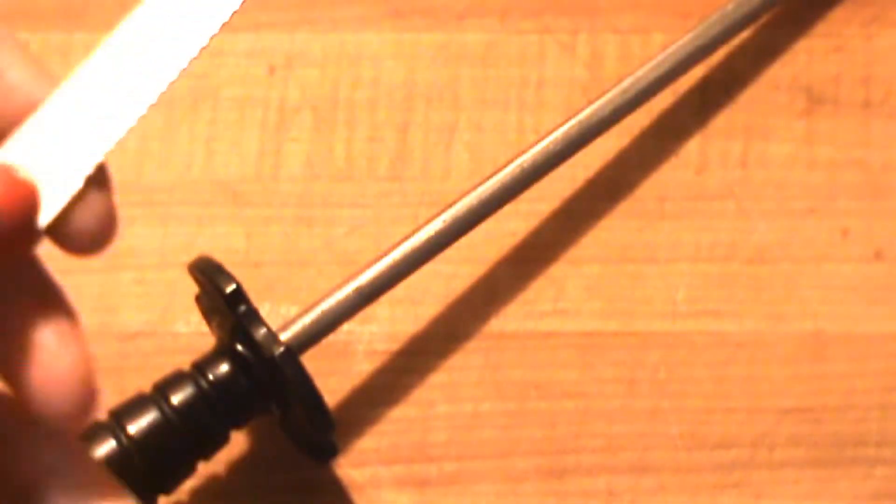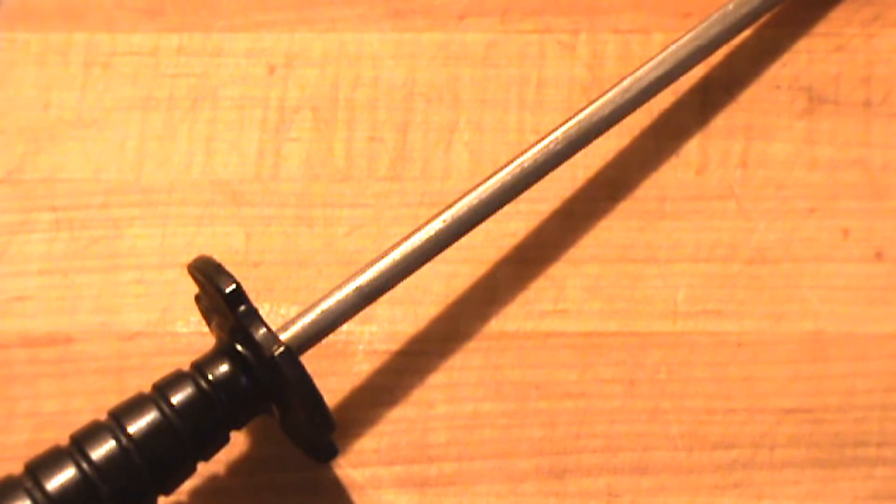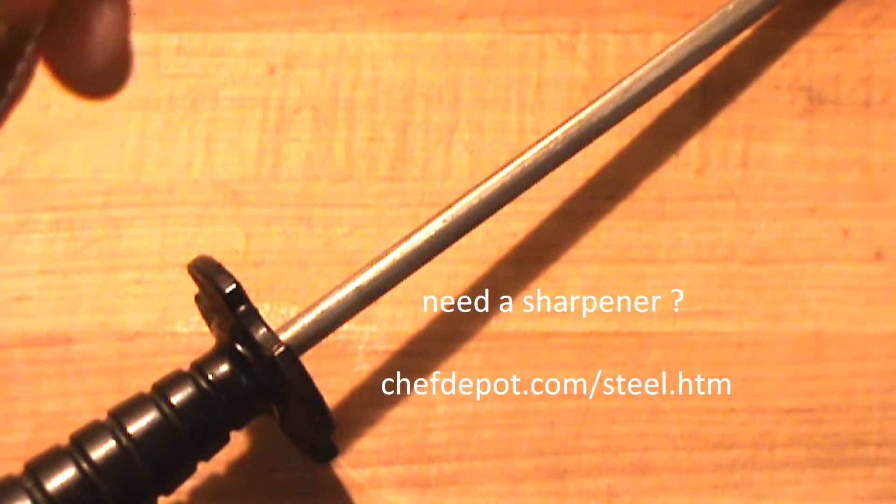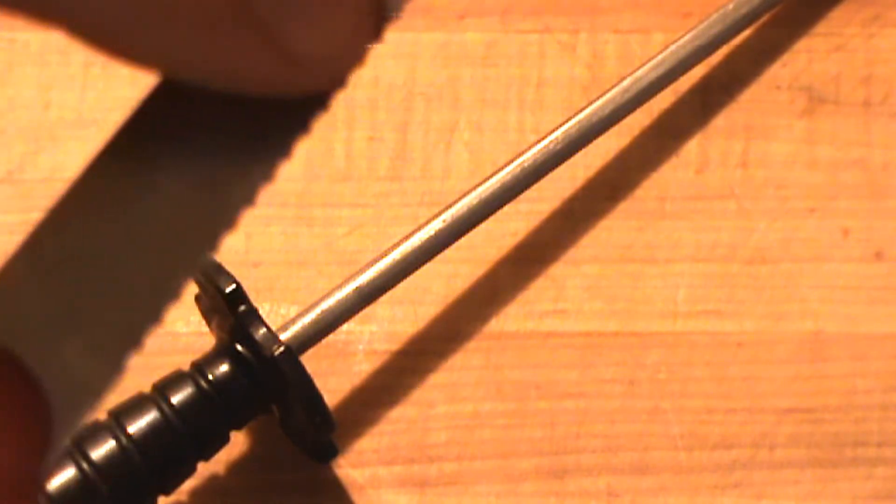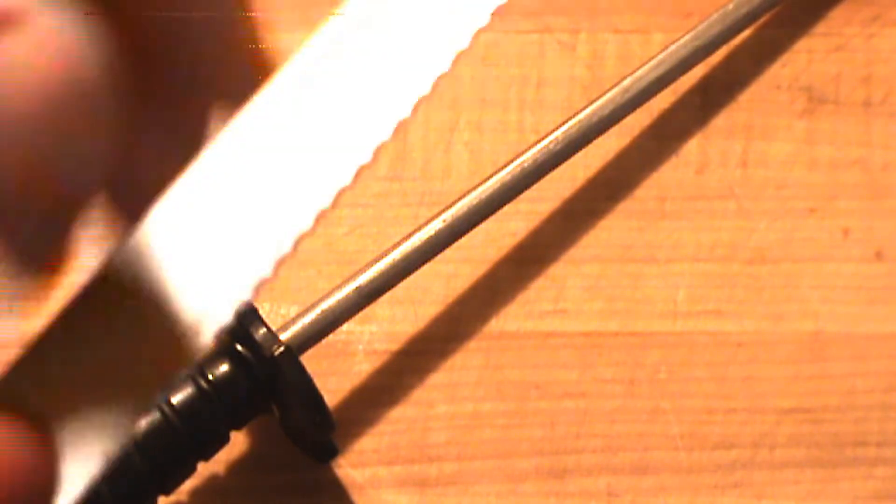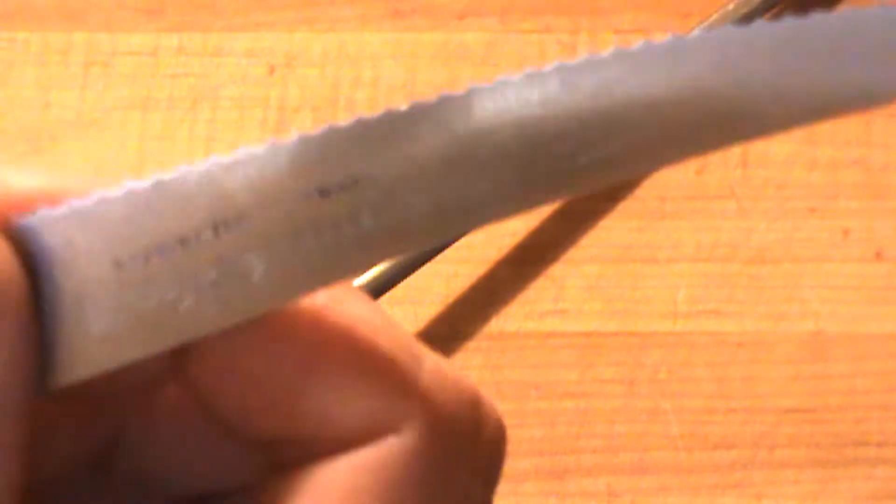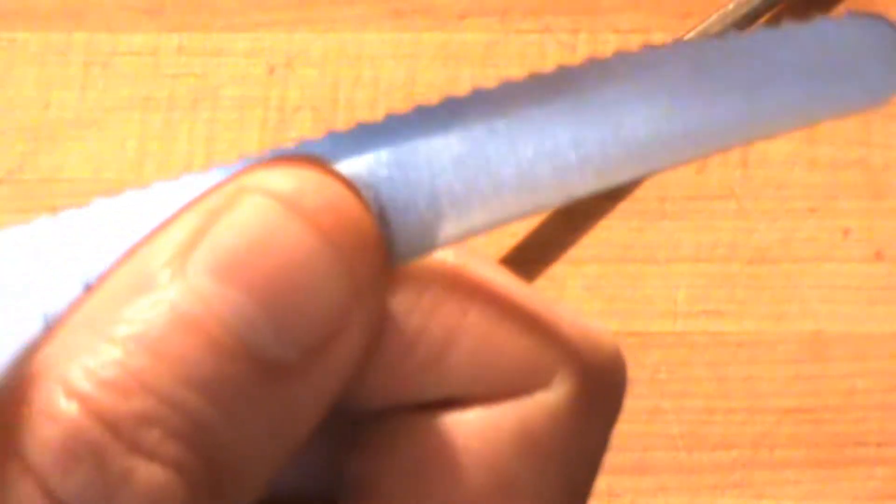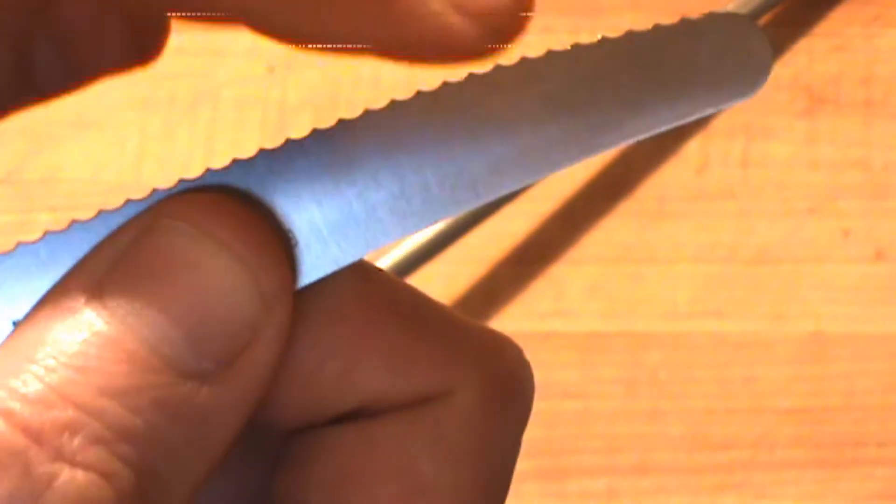I'm using a diamond sharpening steel. With this particular knife, it's serrated on one side and sharpened with little tiny coves in there. The other side is flat, and you can see it's just flat right there, so you leave this side alone.